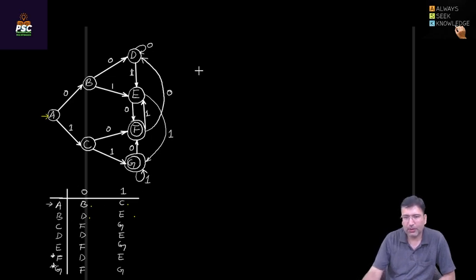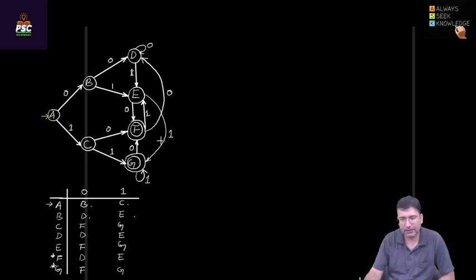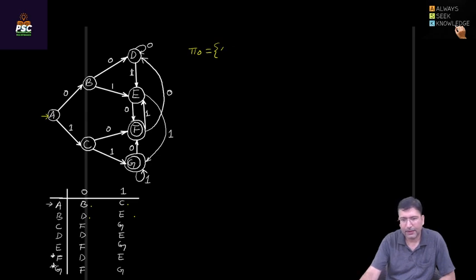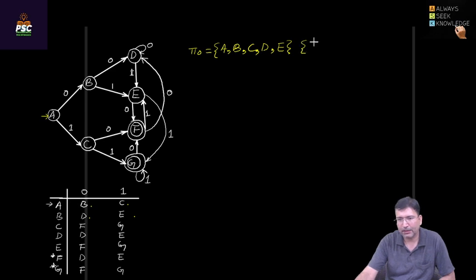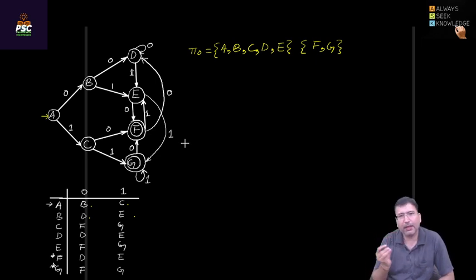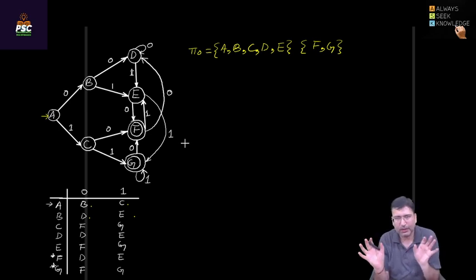To minimize it, we need to find the equivalence classes: π0, π1, π2, and so on until we get repeated classes. For π0, we put all final states in one group and all non-final states in another. States a, b, c, d, and e are non-final, while f and g are final. So there are two sets in the zero equivalence class.